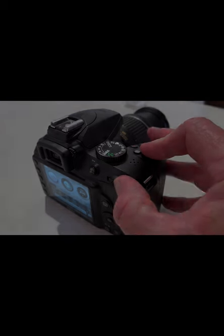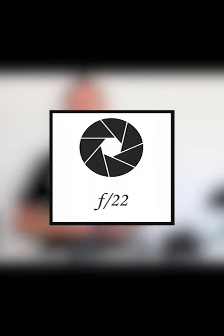The F numbers can be confusing at first because they work back to front. A large aperture is a small F number, and a small aperture is a large F number.